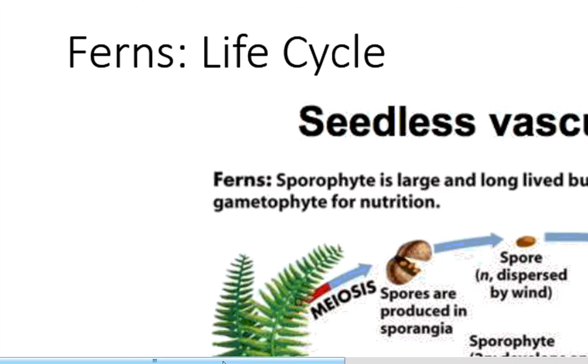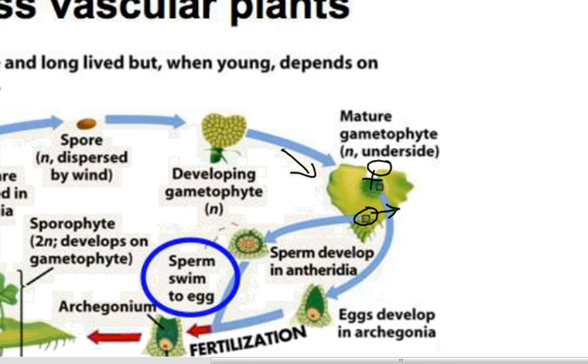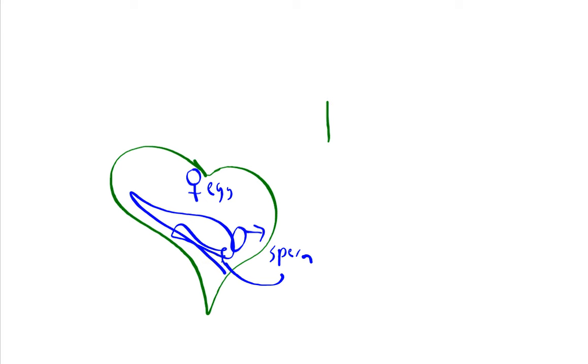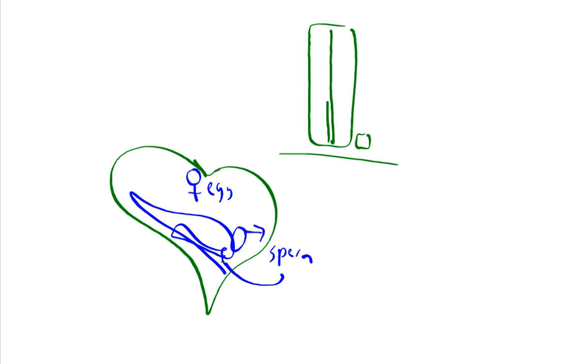One other structural difference in ferns is the gametophyte. The gametophyte of a fern is actually just a little heart-shaped leaf. On this leaf is located both the archegonia and the antheridia. So eggs are made here and sperm here — both on this same gametophyte structure. The sperm and egg combine on this little gametophyte. It looks like a tiny little leaf just sticking out of the ground next to the actual sporophyte.